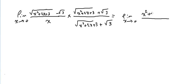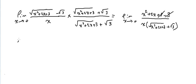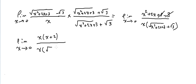The 3 and -3 cancel. We can factorize x in the numerator: x(x+2) over x(√(x²+2x+3) + √3). We simplify the x, giving limit as x→0 of (x+2) over (√(x²+2x+3) + √3).